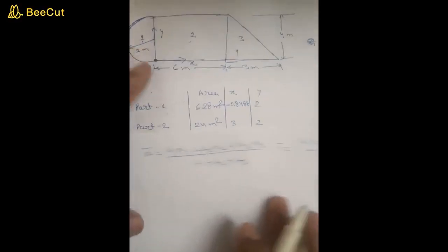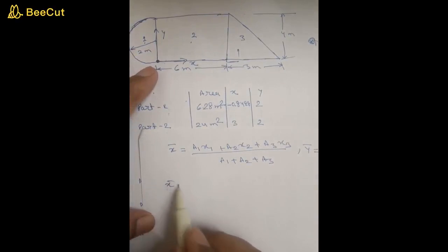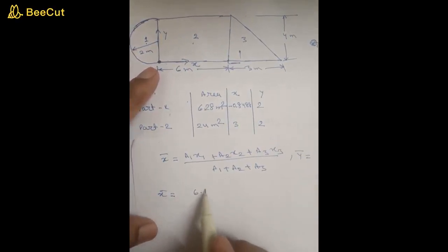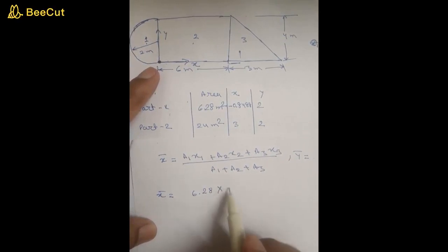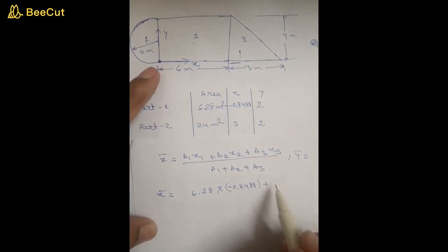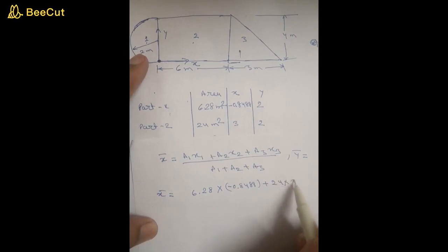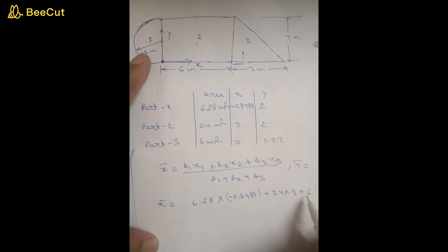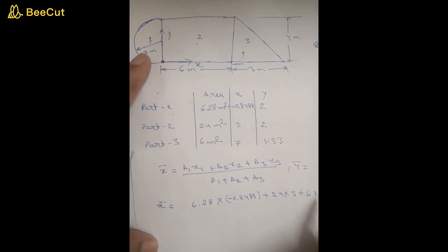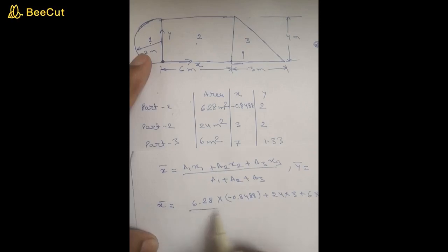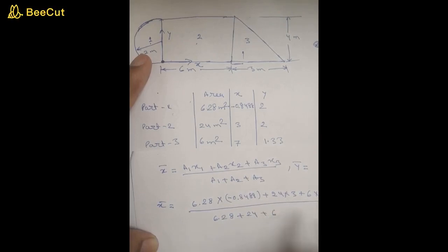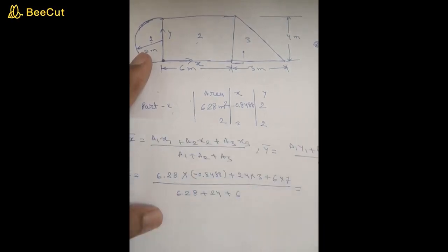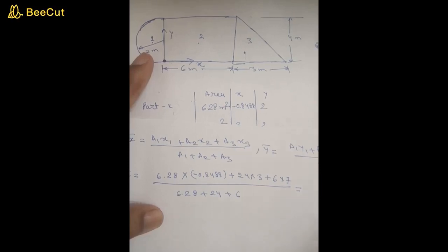Substituting the values: x-bar equals (6.28 times minus 0.8488) plus (24 times 3) plus (6 times 7), all divided by (6.28 plus 24 plus 6). Calculating this on the calculator gives x-bar equals 2.995 meters.